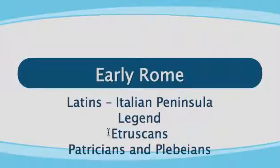Now let's move on to the Etruscans. This group of people conquered the Latins, and during their reign they improved several things. They introduced a writing system based on Greek. They improved the city by paving the roads, building arches, draining marshes, and constructing a sewage system.